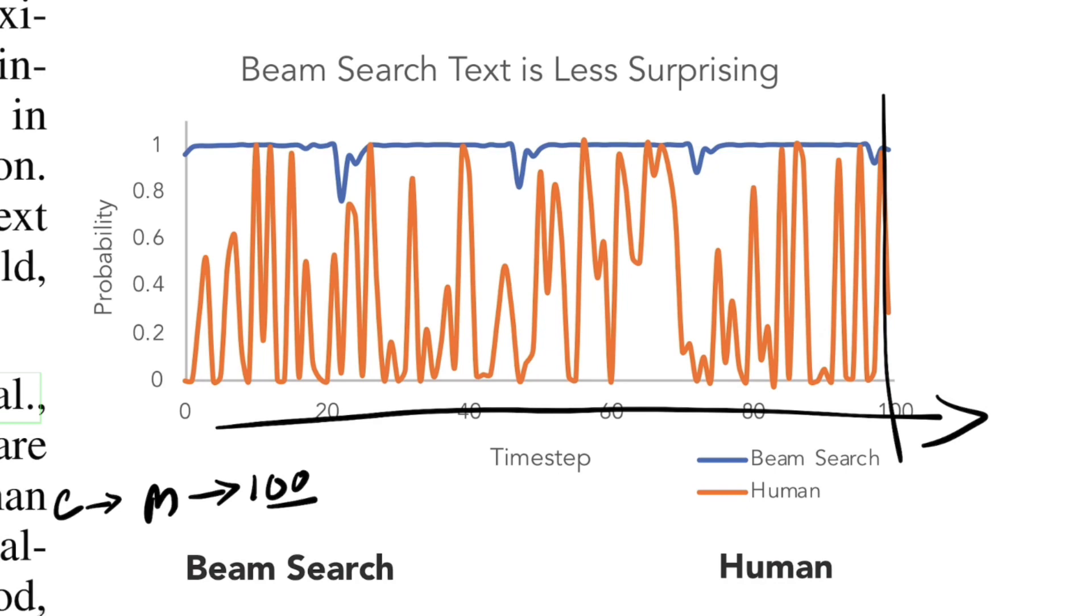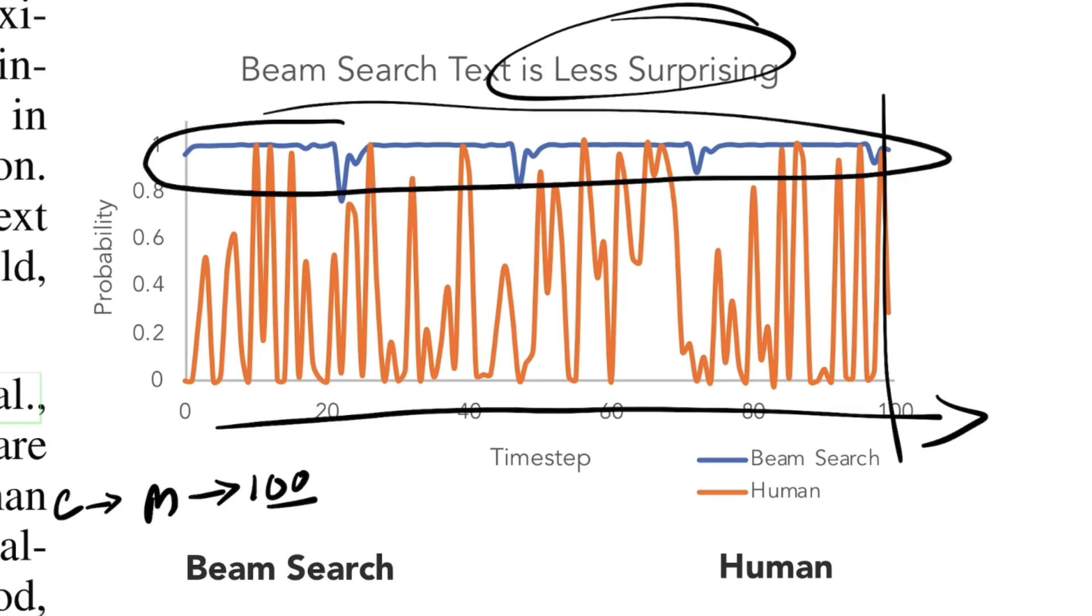The idea of this graph is to show how beam search is less surprising compared to humans. Beam search is mostly circled around 0.8 to 1, meaning it selects high probability words at every time step. It does have certain fluctuations, but those are very minimalistic in terms of being creative.